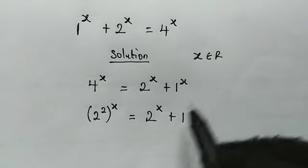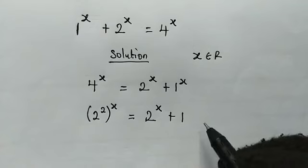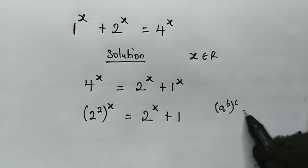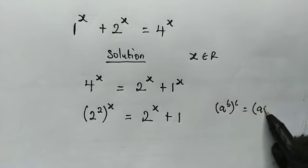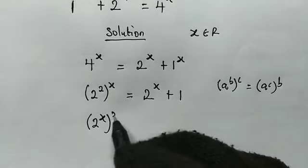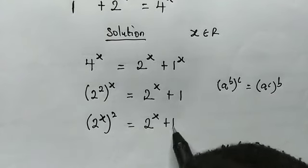Since x is real, 1 to the power of any real number is 1. Now let us take note of this property: (a^b)^c can be written as (a^c)^b. So here this will be (2^x)^2, which is equal to 2^x plus 1.